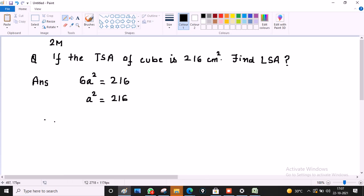6 times A square is 216. A square will become 216 by 6, that is 36. That means A square is 36. This gives us A is equal to square root of 36, which is 6 cm.